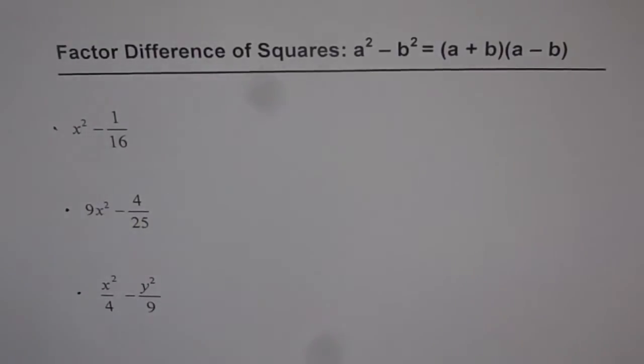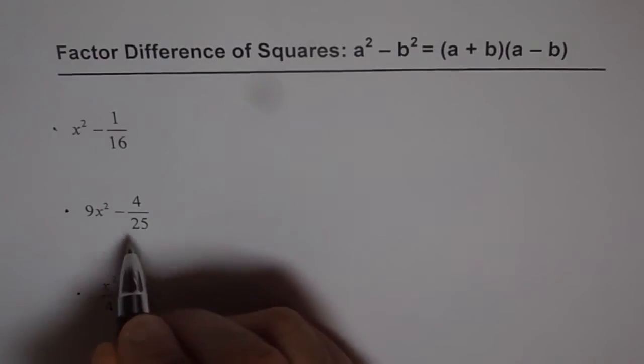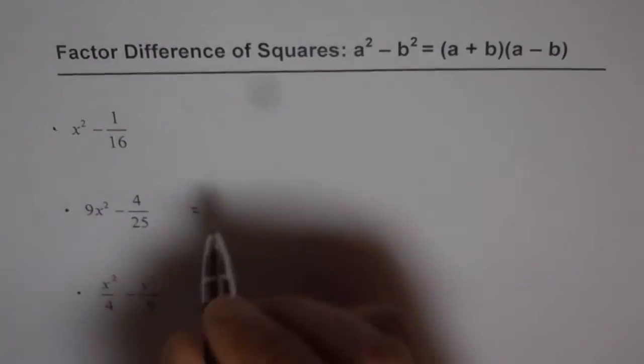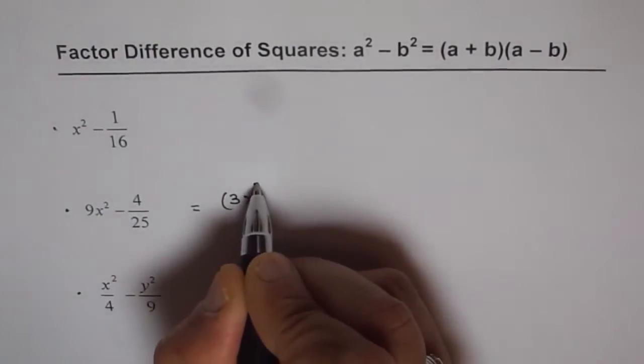And I will do the one right in the center which is 9x squared minus 4 over 25. Now this is kind of a perfect square. 9x squared could be written as 3x whole square, right?